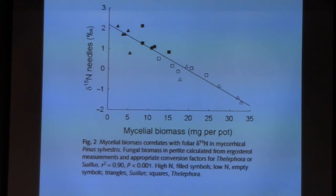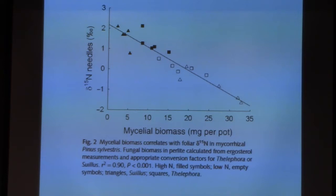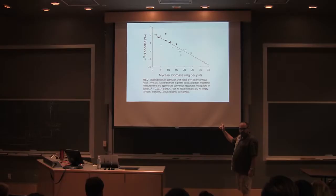The darkened symbols are high nitrogen and the open ones are low nitrogen. Then they inoculated the pots with two different fungi species — Suillus and Thelephora. The observation was that with inoculation, you see a depletion in the N15 of the needles. This depletion is exacerbated and of a higher magnitude in a low nitrogen environment.